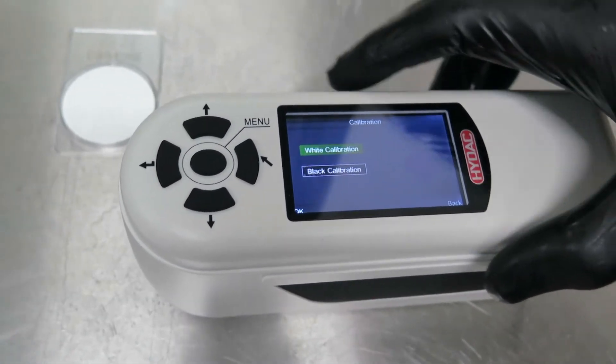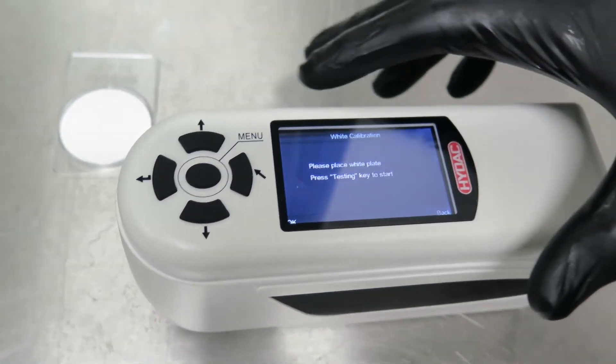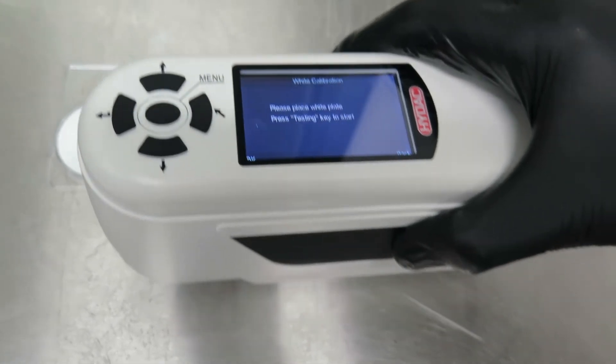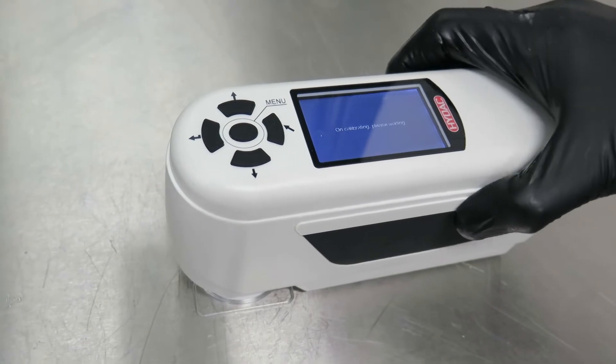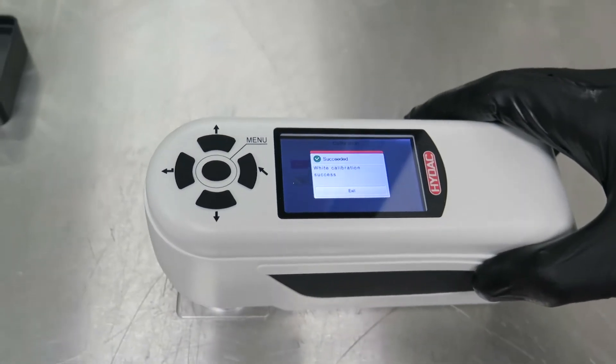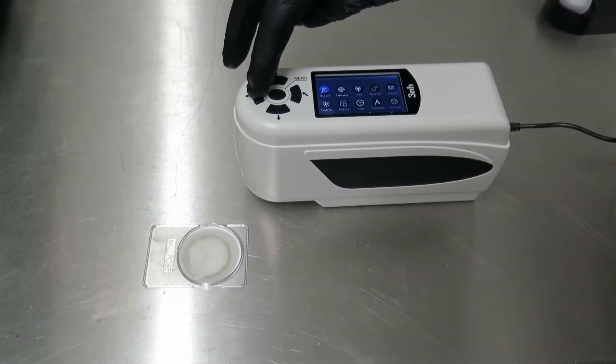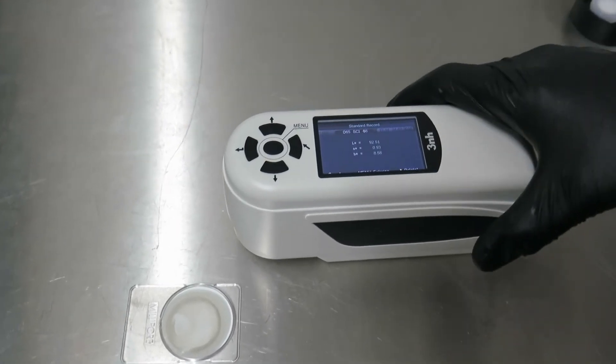It is first necessary to calibrate the analyzer to a new filter patch. This is necessary as the background color of patches will be different. The next step is to measure the color of the new oil and set up this value as the baseline or standard.